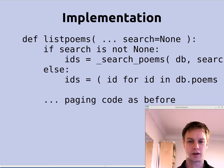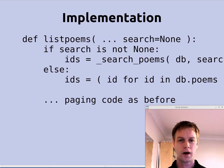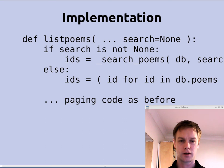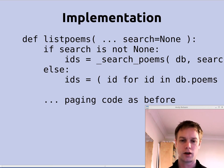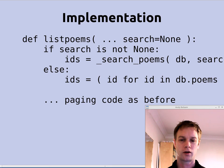So how have I implemented this in our Python implementation? You can check the link to the blog post in the show notes to find a link to the source code on GitHub. We have this listPoems function in our Python. We're adding a parameter called 'search' which defaults to none, meaning no search is happening. Previously, IDs used to be just: 'id for id in db.poems' — which basically means go and list everything in the CouchDB database, then do the paging stuff. But when there's a search term — if search is not none — instead of making IDs by asking the database for db.poems, we call a function called searchPoems, providing the database and what you searched for.